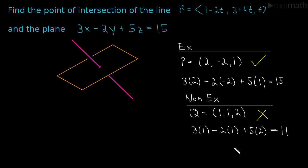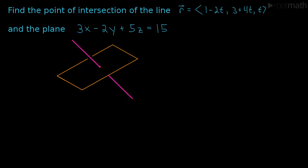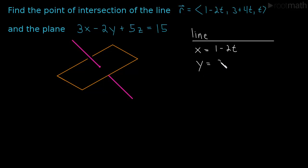We've spent a moment rethinking what it means to be a point in the plane. Now let's think about what it means to be a point on the line. This is the vector equation of the line, and the parametric equations tell us: x is 1 minus 2t, y is 3 plus 4t, and z is just t. Plugging in any t value gives a point on the line. We want a point that is on both the line and the plane — that's the intersection point.